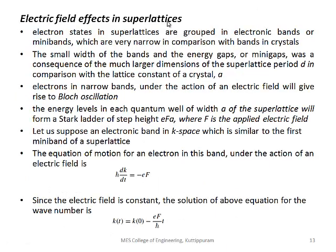Next we discuss electric field effects in superlattices. In superlattices, electron states are grouped into minibands which are very narrow. This is because the superlattice period is very large compared to the lattice constant of a crystal. When applying an electric field to these minibands, electrons undergo Bloch oscillations.